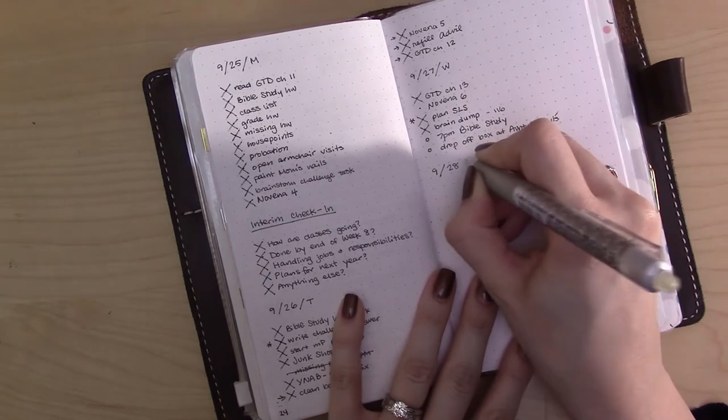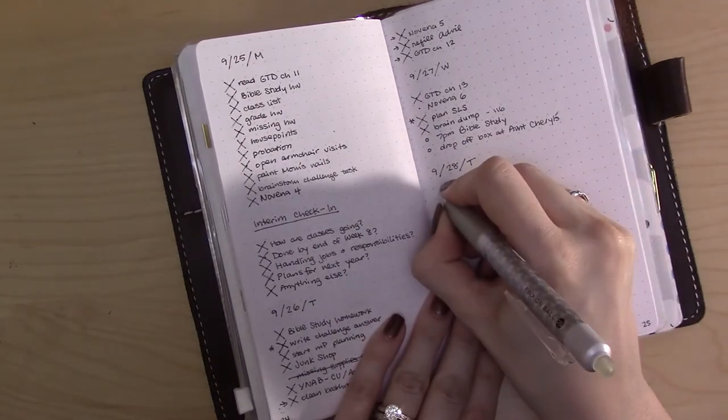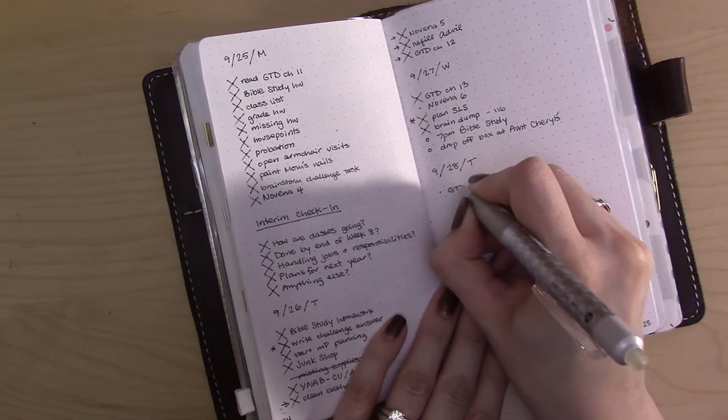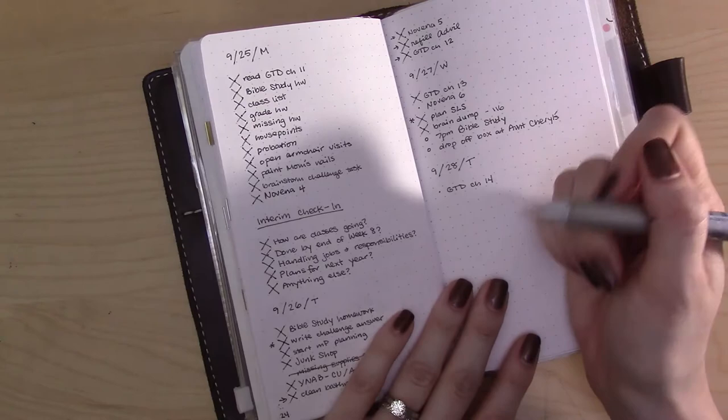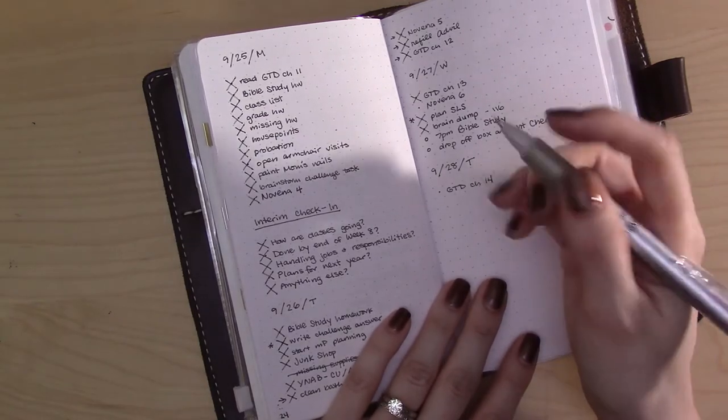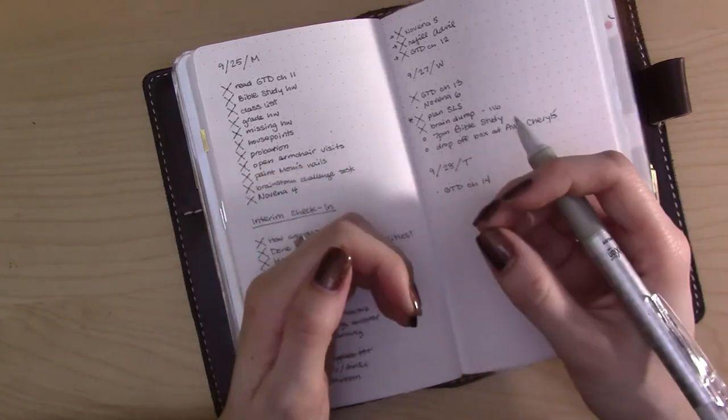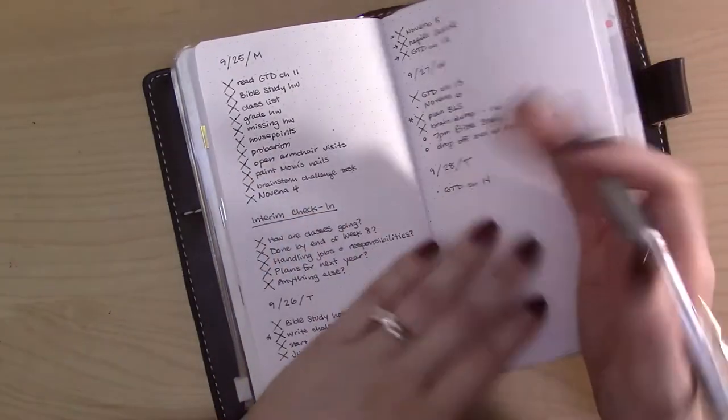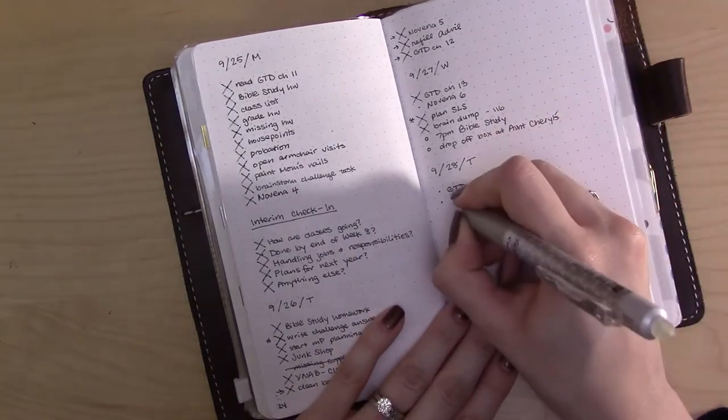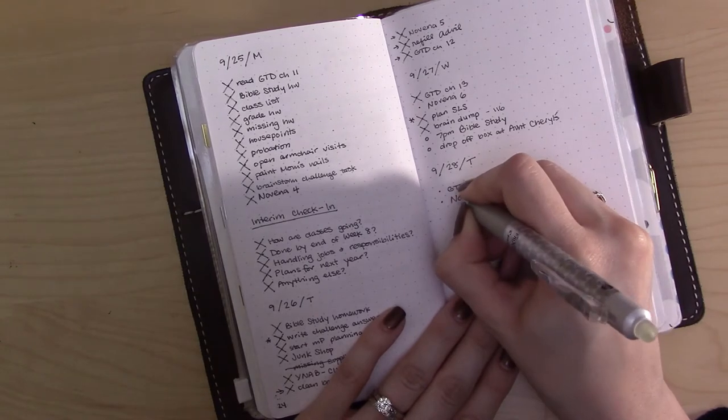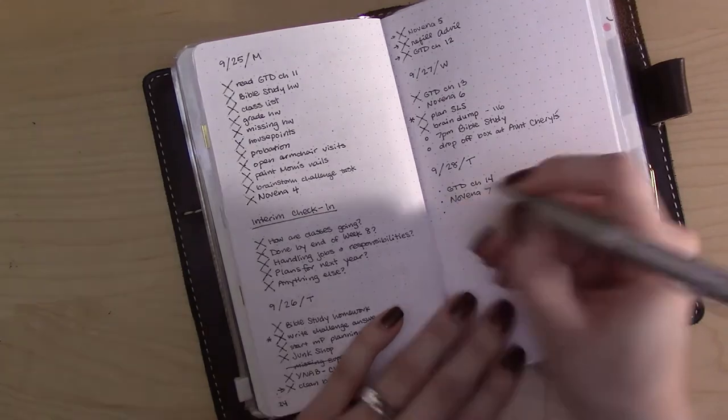So let's go ahead and set up the 28th. It's a Thursday, we're getting so close to the end. All right, I only have two more chapters left to read in my book, so let's read chapter 14. They're getting nice and short and they're wrapping up, they're sort of going over the same information again. Basically, they're easier to read and quicker to read, so I'm making good progress. Novena day seven.